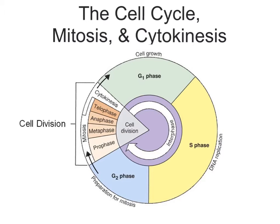This picture shows the entire cell cycle. We can divide the cell cycle into two major parts: interphase, which consists of G1, S, and G2, and then cell division, which is mitosis and cytokinesis.